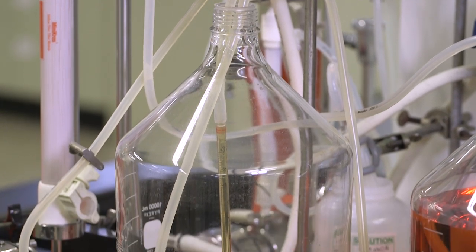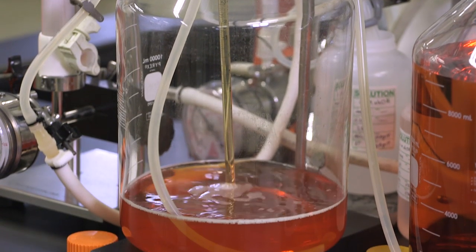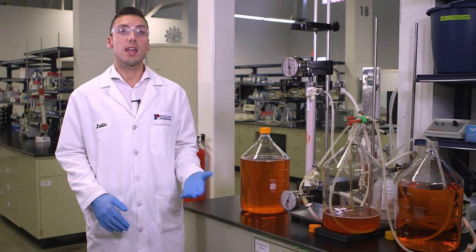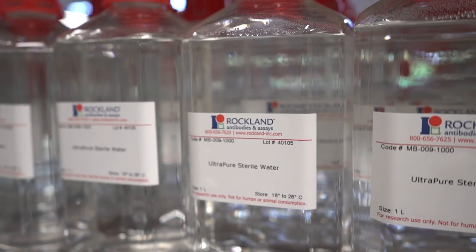We often check the efficiency of our column capillaries by running a BSA check on them to make sure we're not depleting any antibody protein when we're doing our production runs.